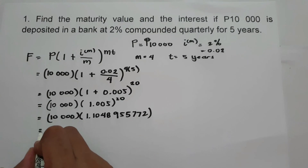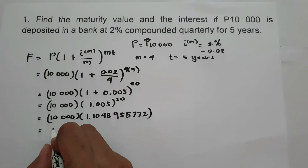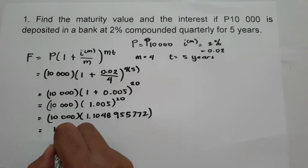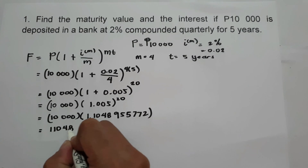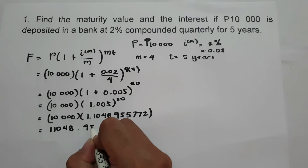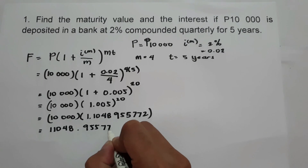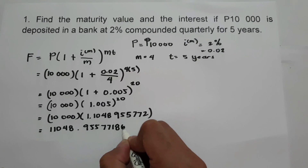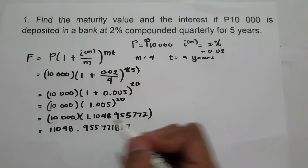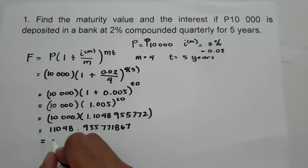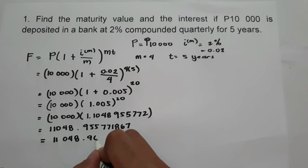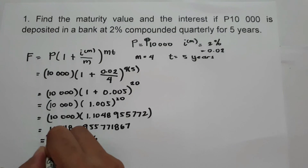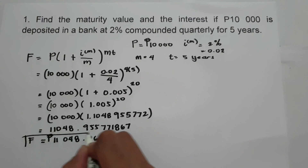Therefore, our future value is 11,048.9557186, or we can write our answer as 11,048.96. This will be our future value.